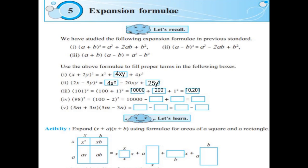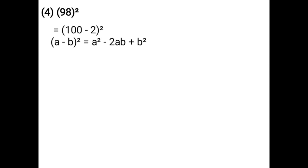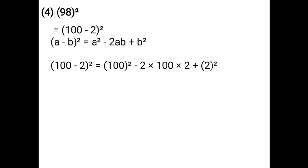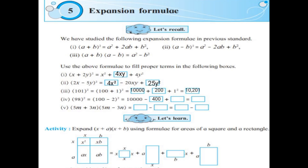Next: 98 whole square. The expansion form of 98 whole square is already given as (100 − 2) whole square. You have to use the formula of (A − B) whole square: A² − 2AB + B². That gives 100² − 2 × 100 × 2 + 2 whole square. You have to fill the correct numbers in the boxes: 10,000 − 400 + 4.